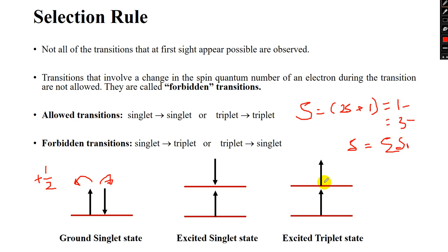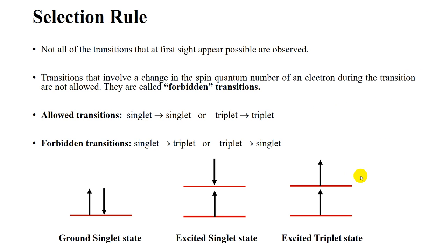In the first excited state, I have shown the singlet state, and in the ground state it was also singlet, so that transition from singlet to singlet is allowed. However, where the spin changes — it was in the downward direction and becomes upward — the transition goes from singlet to triplet, which is not possible. So that transition is forbidden.